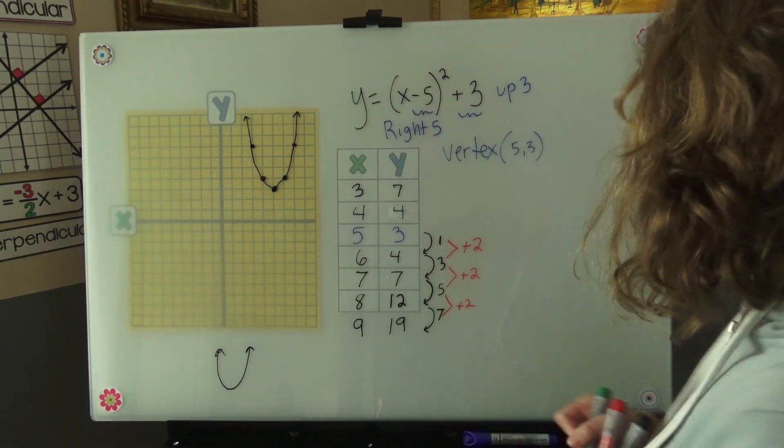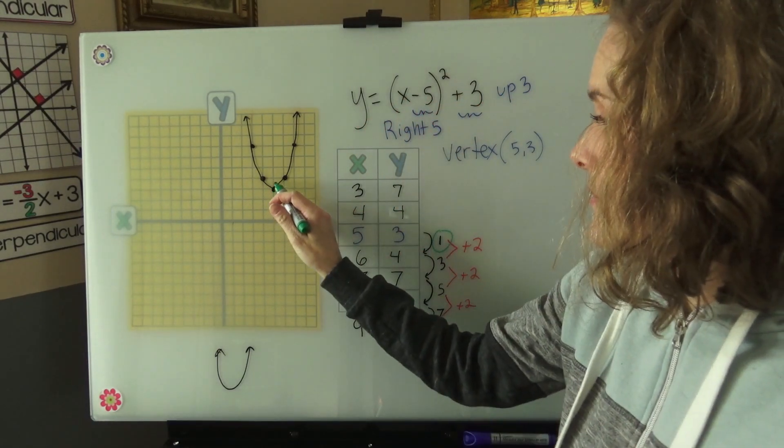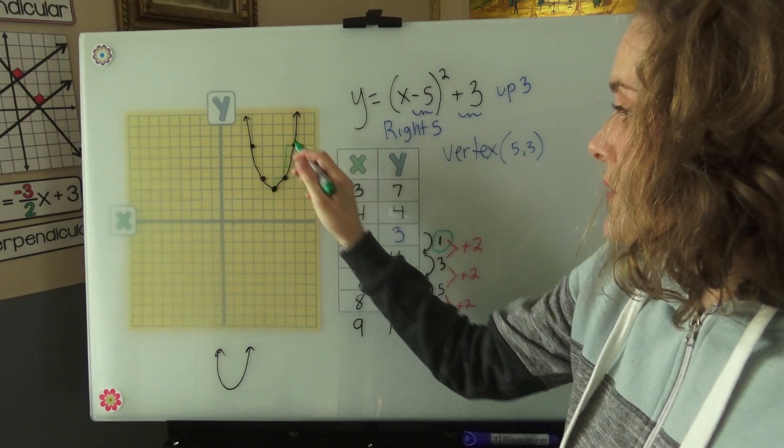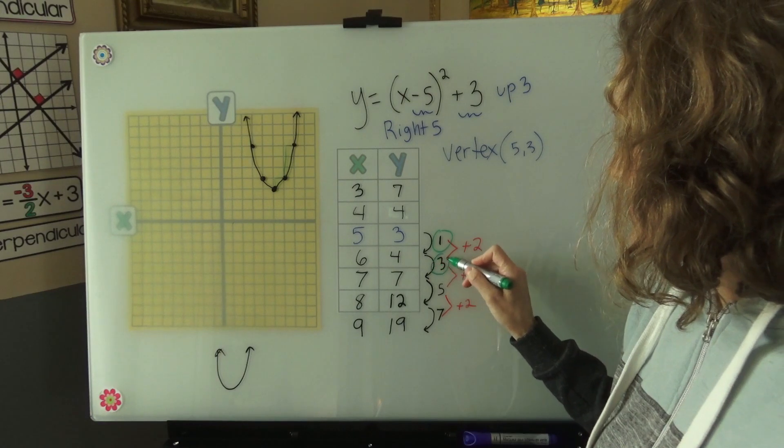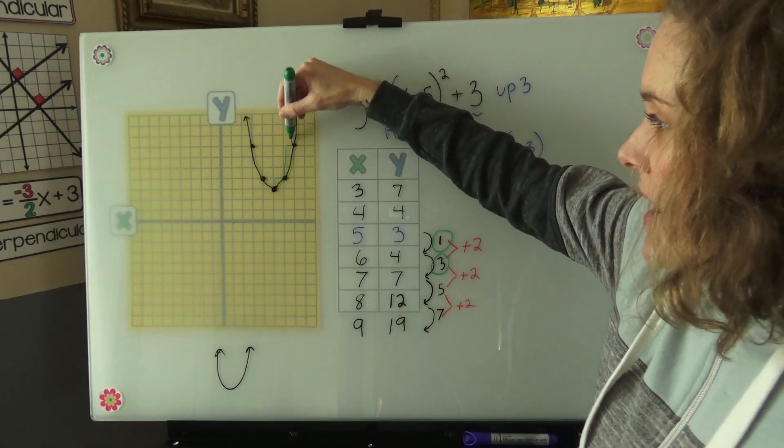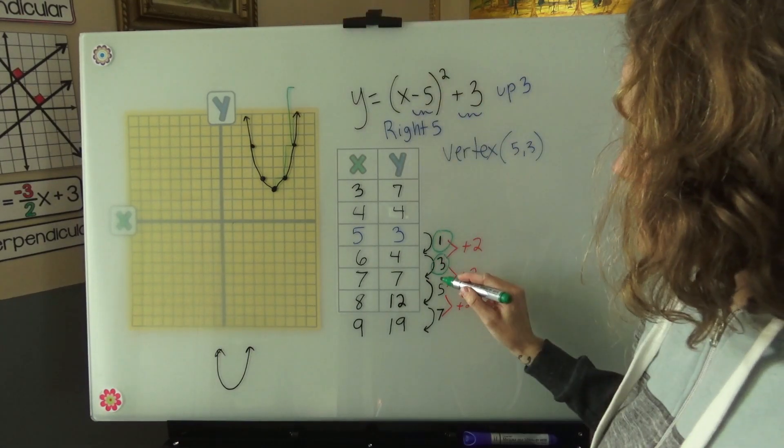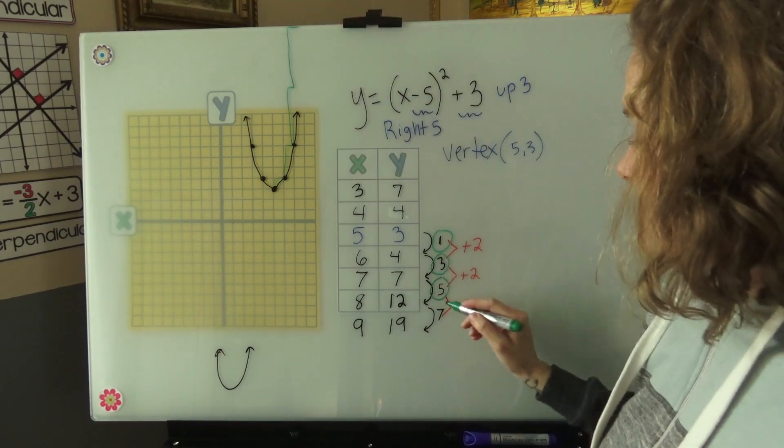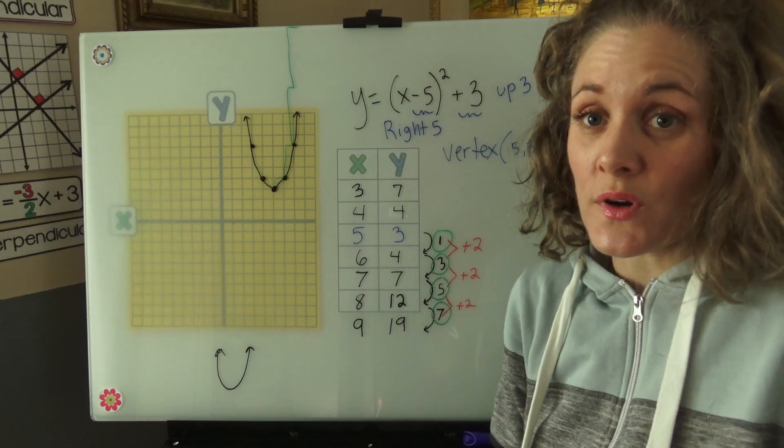Up 1. Up 3 over 1. Up 5 over 1. Up 7 over 1. So we can use that as a shortcut.